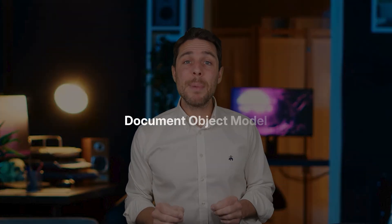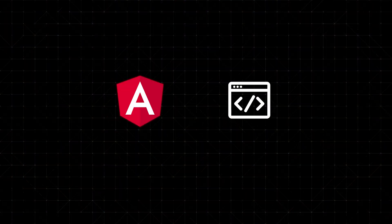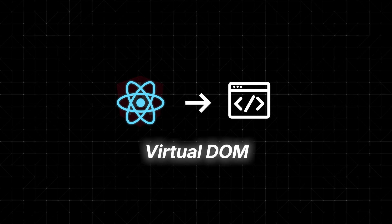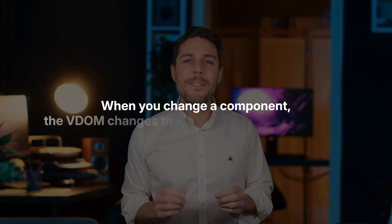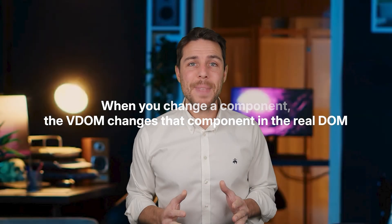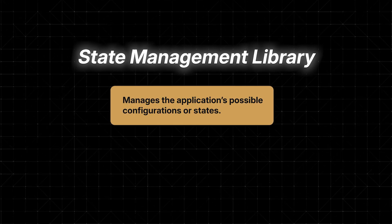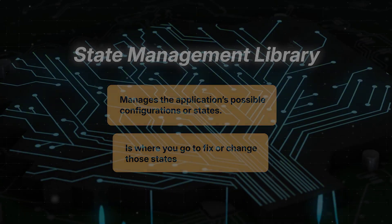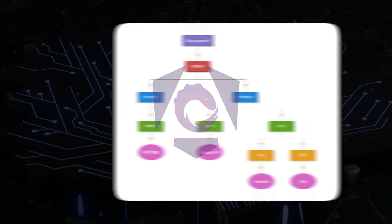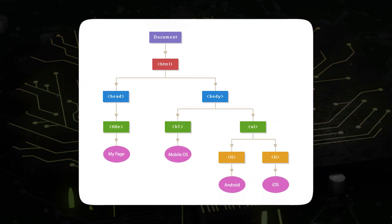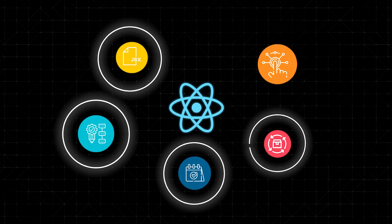Consider how each approaches its Document Object Model, or DOM. The programming interface on Angular is a real physical DOM, while React opts for a virtual DOM. The benefit of the VDOM is that when you change a component, the VDOM changes that component in the real DOM, which is more efficient because the VDOM uses fewer resources. The React VDOM also has its own state management library, while Angular uses NGRX. A state management library manages the application's possible configurations, or states. NGRX is solid and dependable and puts the various states of your app on a tree that you can access from anywhere on the app. In React, because it's already a library, every component can have its own state, with a range of state management tools to access it, or even none once you have experience with how React's VDOM works.